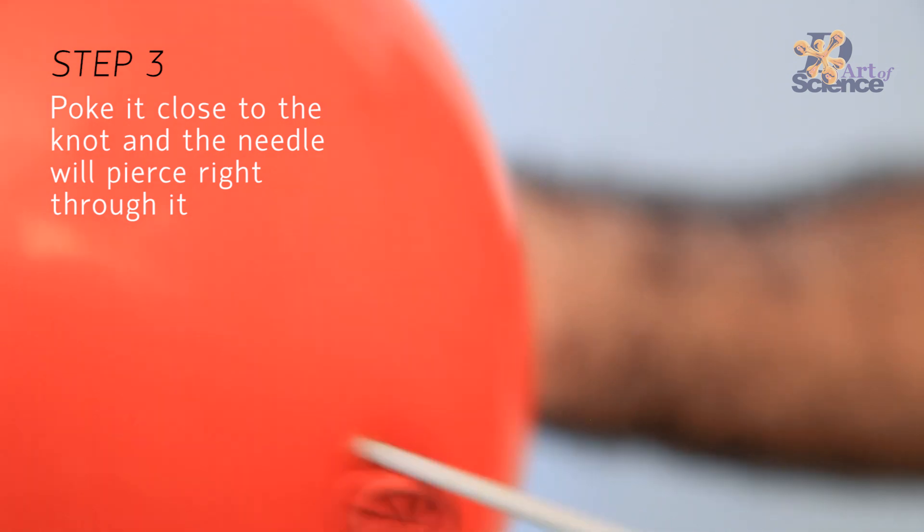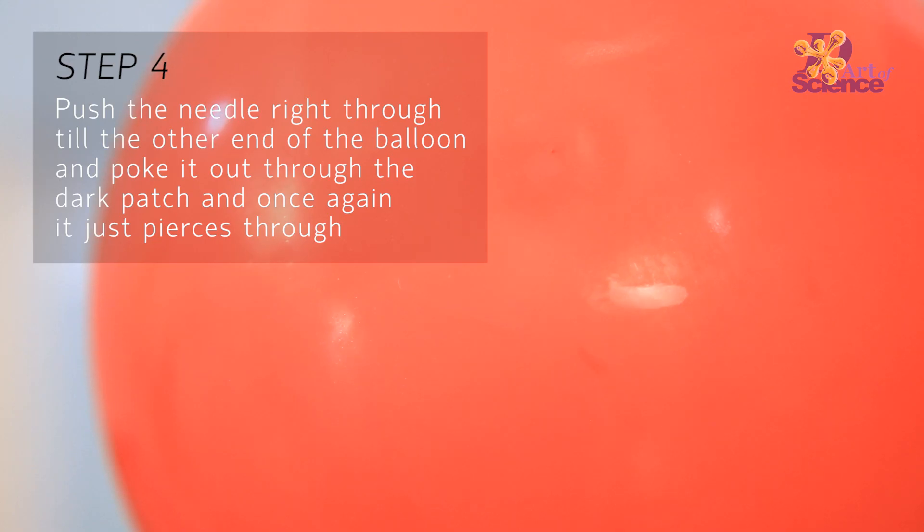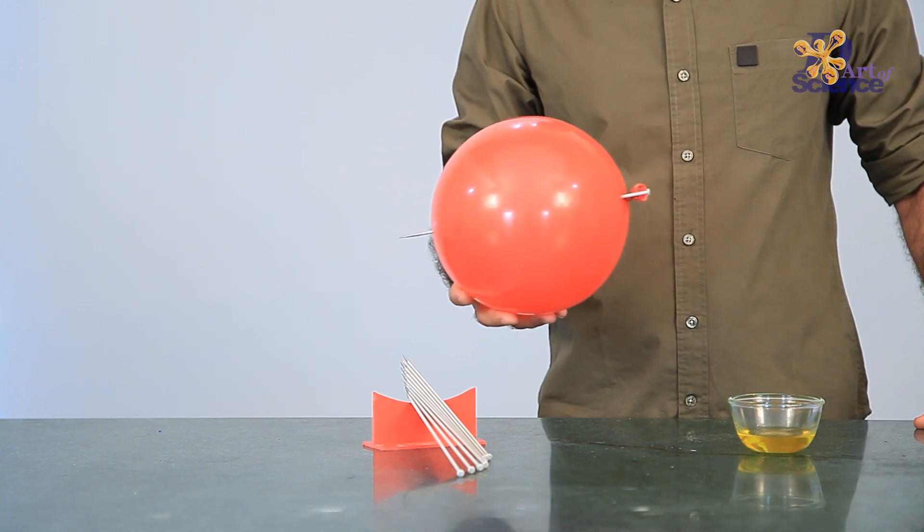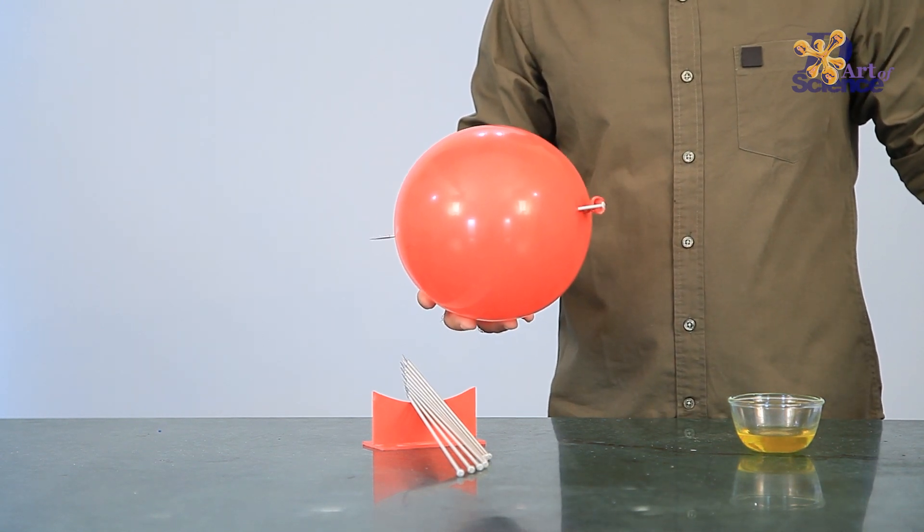The reason we choose these places to poke the skewer in is because in these places the balloon isn't stretched as much as the other ones. If we poke the skewer in a place where the rubber is already stretched a lot, the balloon will pop.